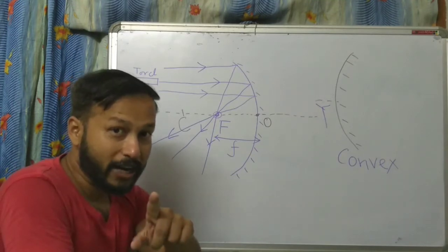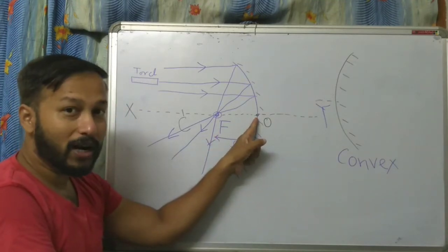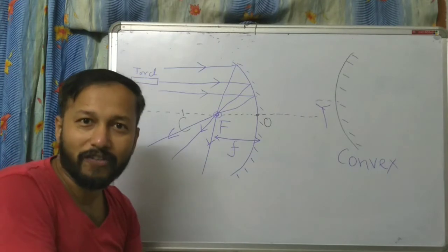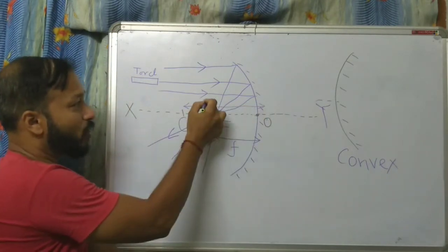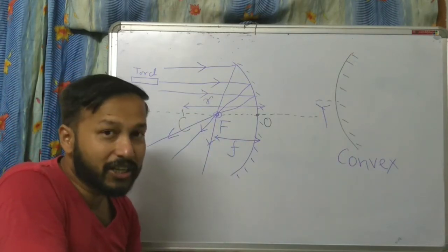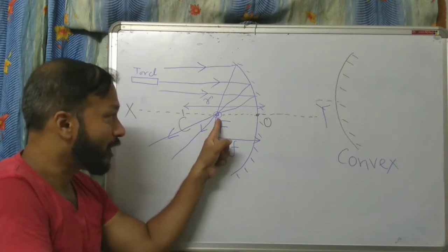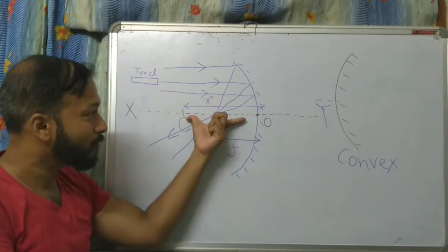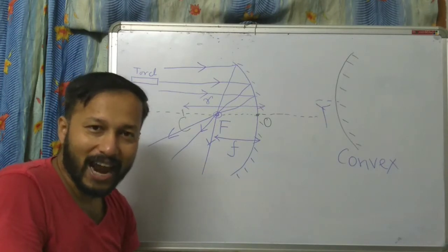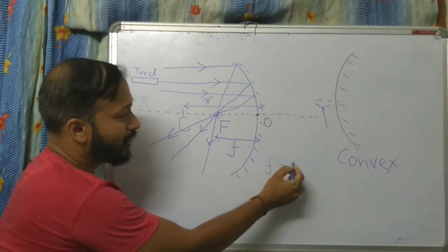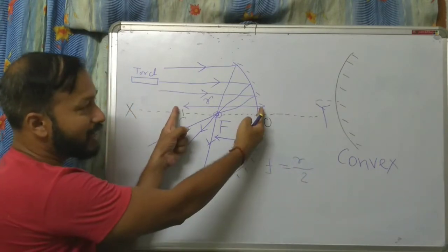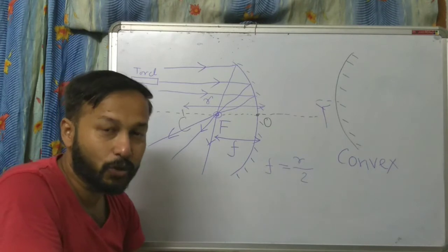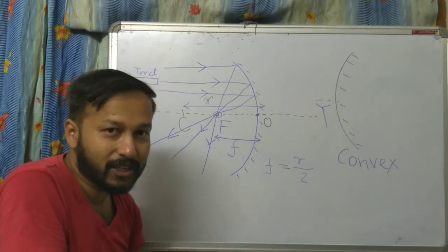And the distance between this focus point F and the optical center O is called the focal length, represented by small f. Also remember: the distance between the pole and the center of curvature is the radius of curvature R. The focus point F is the exact midpoint of O and C, so F equals R divided by 2. This is a very important relation.